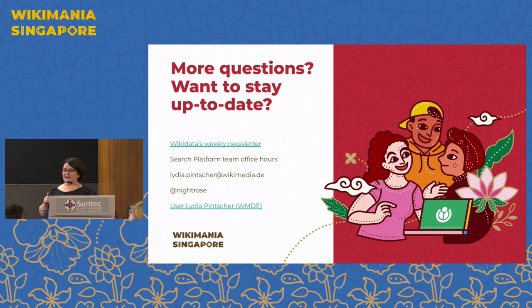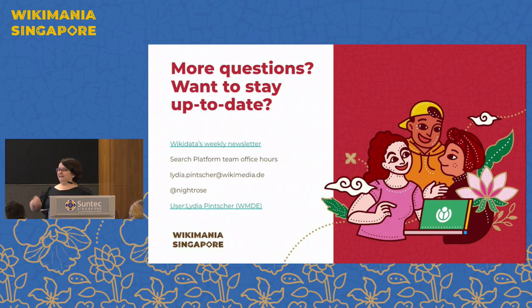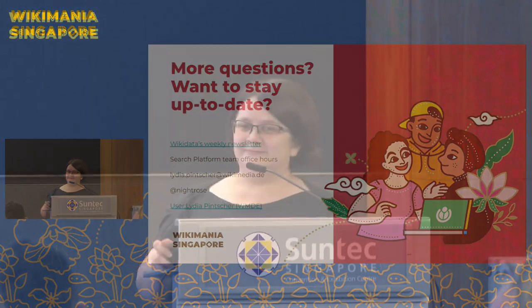That is the status quo. We have about 10 minutes for questions. If you want to stay up to date, subscribe to the Wikidata Weekly Summary, come to the search platform team's office hours, or send me an email or poke me on my talk page. First question: is there a guideline, or are you thinking of creating one with the community, for deciding whether a set of data should go to the main Wikidata or to Wikibase Cloud? And the other question: regarding evangelization for new backends, is this need shared by other organizations beyond Wikimedia, maybe in industry — are we the only ones needing this solution?